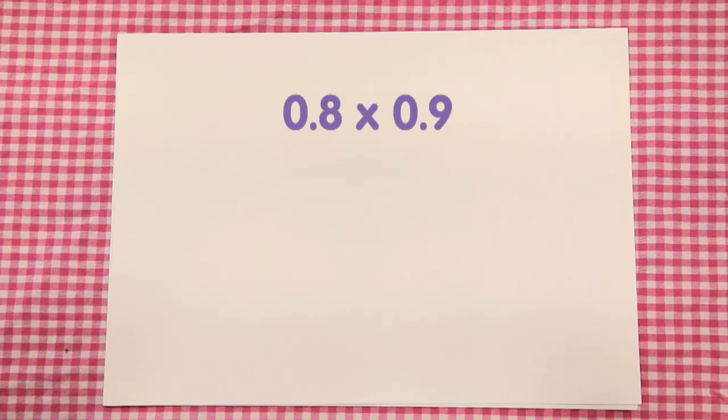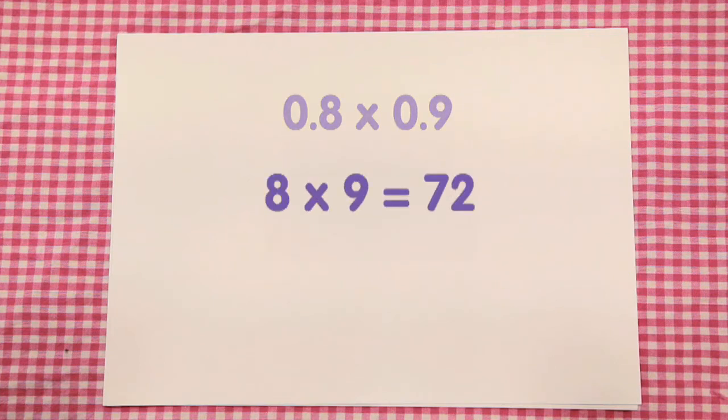0.8 multiplied by 0.9. Let's make this sum easier. 8 multiplied by 9 equals 72.